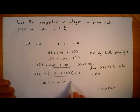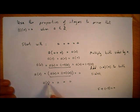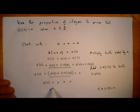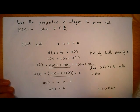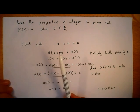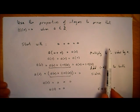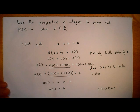So we have a times zero plus zero, which equals zero. And since adding zero to anything gives you the same thing, we get a times zero equals zero. We've proven what we set out to prove: an integer multiplied by zero equals zero. QED — we're done.